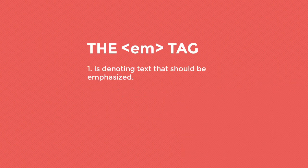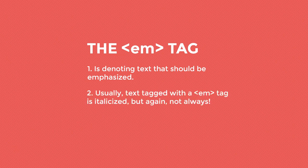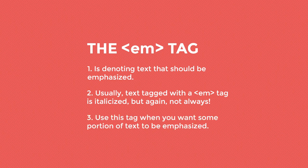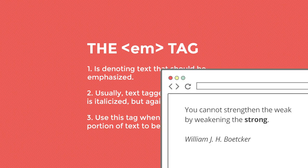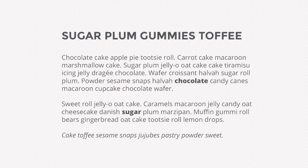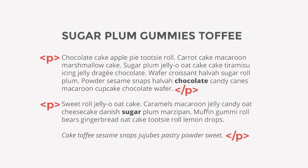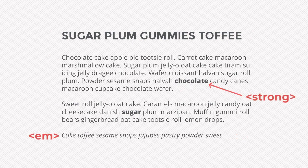The EM tag is used to denote text that should be emphasized. Usually text tagged with the EM tag is italicized, but not always. Use this tag when you want some portion of text to be emphasized. To recap, the basic tags you need for text are H1 through H6, P tags, strong, and EM tags.